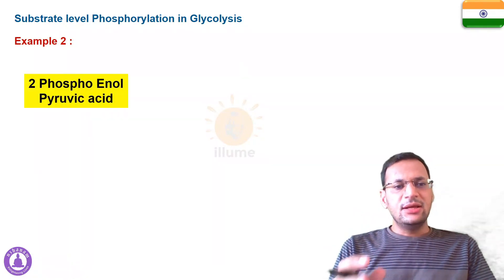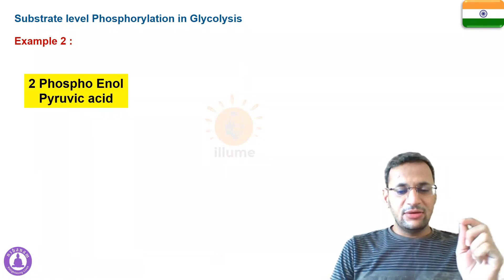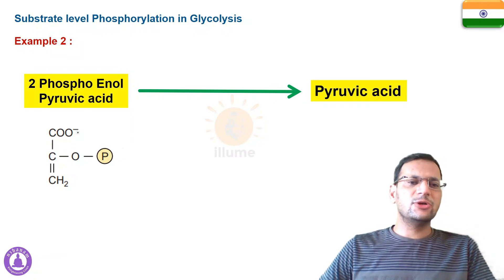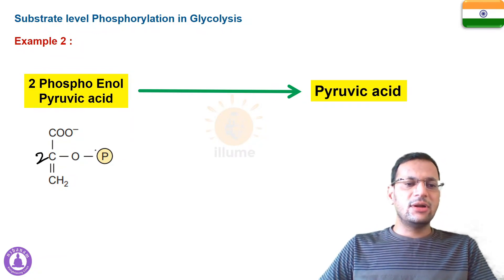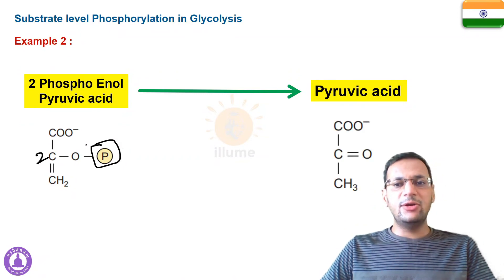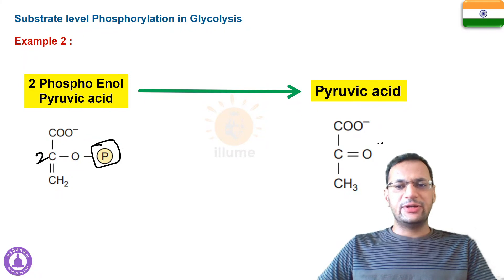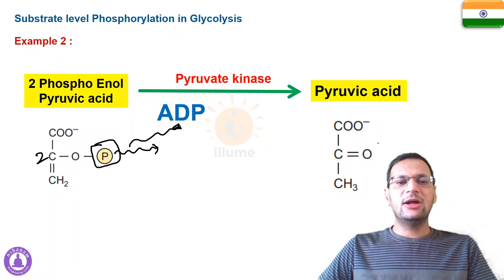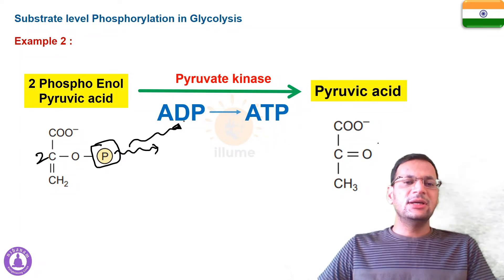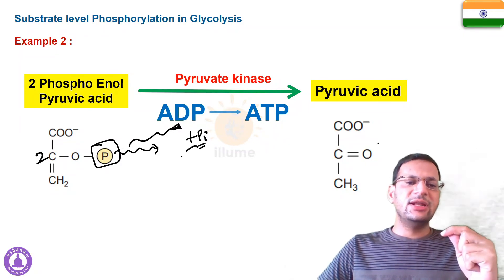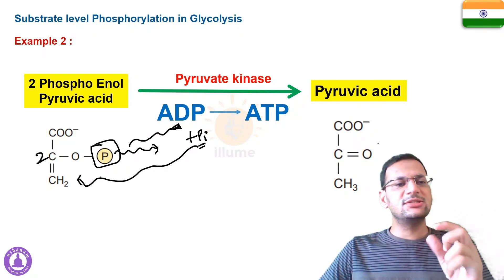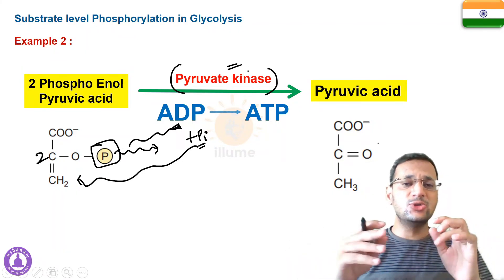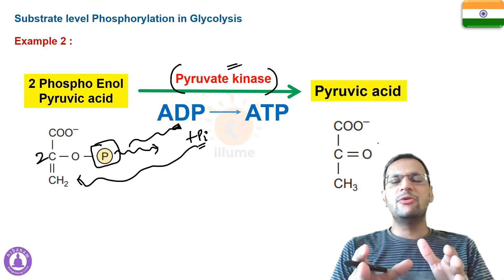The second example is the last reaction of glycolysis, in which 2-phosphoenolpyruvate (PEP) is converted into pyruvic acid. In phosphoenolpyruvic acid, a phosphate is attached to the second carbon. It is converted into pyruvate, which has no phosphate. This phosphate is released from the substrate and gets attached to ADP, converting it into ATP — so again, this is a substrate level phosphorylation. The enzyme that catalyzes this reaction is pyruvate kinase.